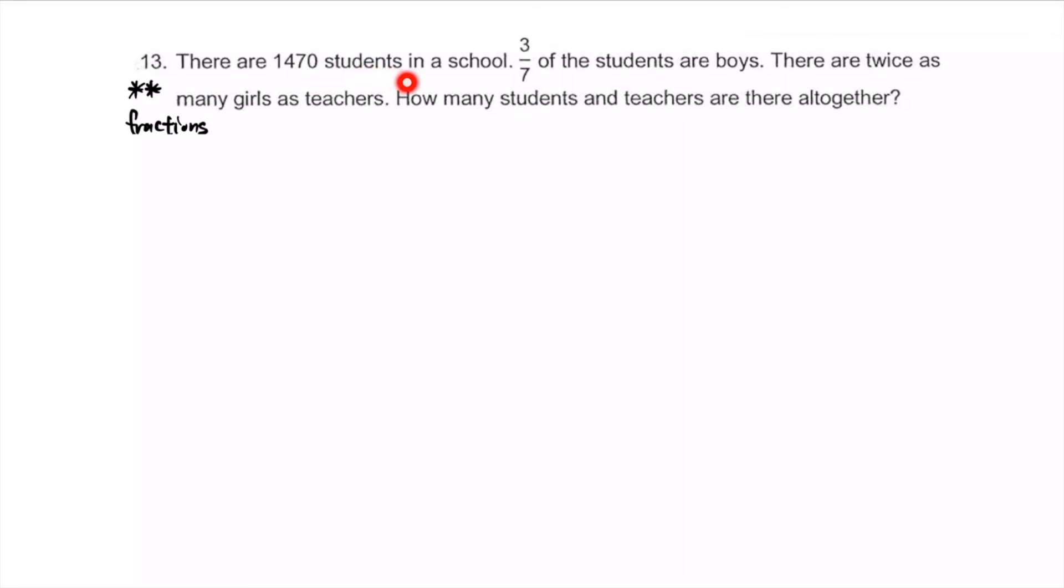There are 1470 students in the school. 3/7 are boys. Since we're dealing with just boys and girls, if 3 units are boys, then 4 units are girls. We can find the actual number. So 3/7 of this are boys, 4/7 are girls. Let's find the real number. What's the actual number of girls? That's 4/7 of 1470. Simplify by 7, then times 4. 840 girls.